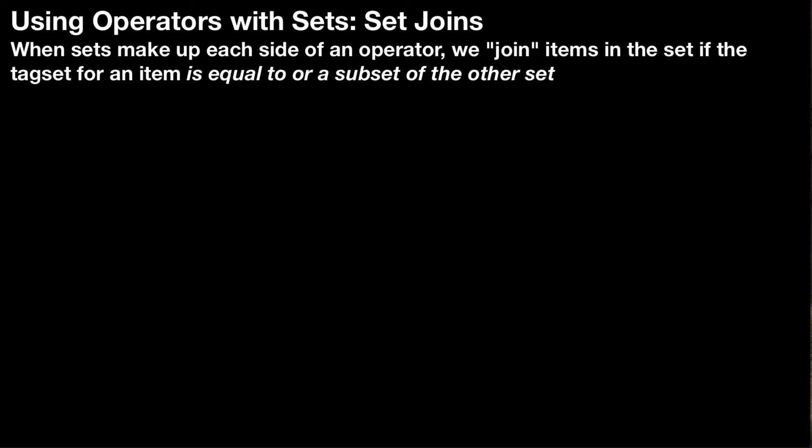You can also use operators when you have sets on both sides of the operator. The same rules apply: you can have a number set and a series set, or a number set and a number set, but you cannot have a series set and a series set. When sets make up each side of an operator, we join items in the set if the tag set for an item is equal to or a subset of the other set. So let's look at some examples — first, ones that will work.